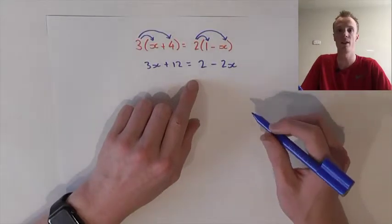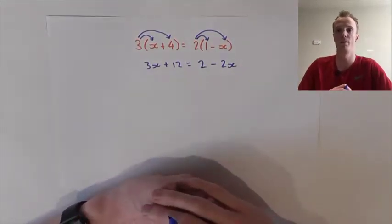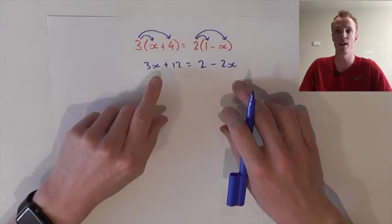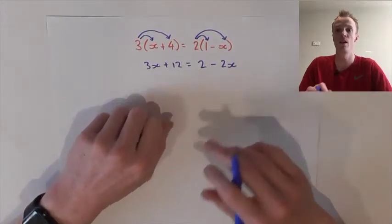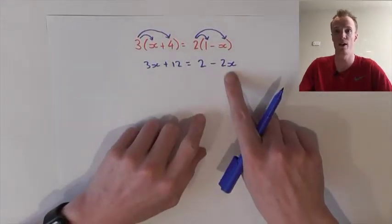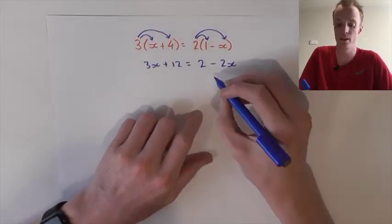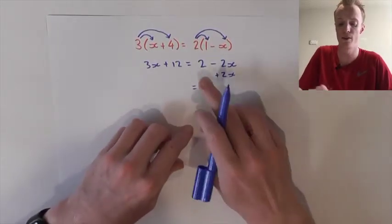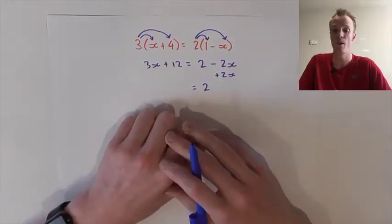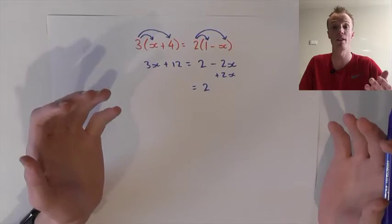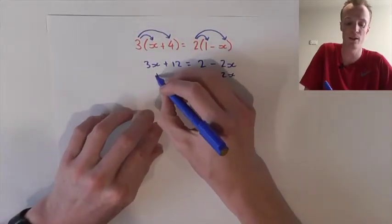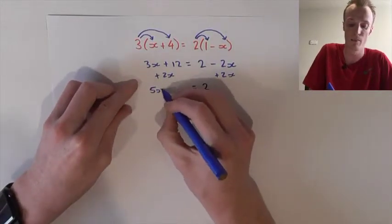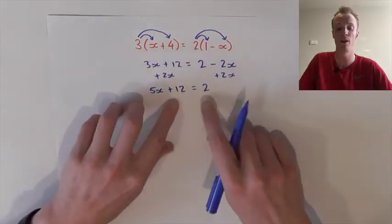From here we need to isolate the x value to one side of the equation. I'm going to remove the x value from the right-hand side in order to keep a positive x value in the equation. To do this I must complete the inverse of this subtract 2x. The inverse of subtract 2x is to plus 2x, which will cancel it out on the right-hand side and leave us just with our 2. However, whatever we do to one side of the equation to keep it balanced we must do to the other, so we also must plus 2x to the left-hand side, giving us 5x total plus the original 12, which will equal that 2.